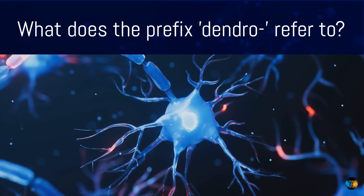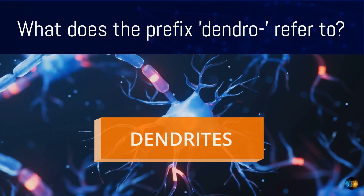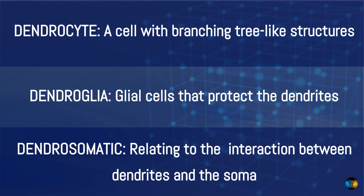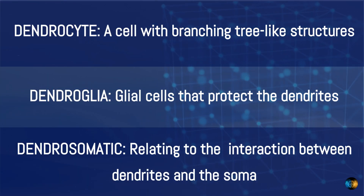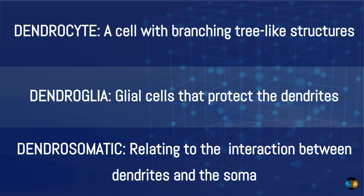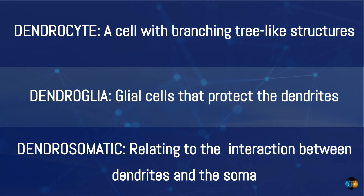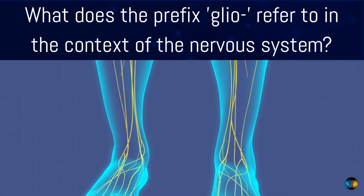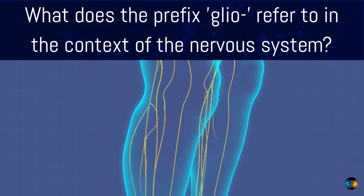What does the prefix 'dendro' refer to? Dendrites. For example, dendrocyte is a cell with branching tree-like structures; dendroglia are glial cells that protect the dendrites; and dendrosomatic relates to the interaction between dendrites and the soma.